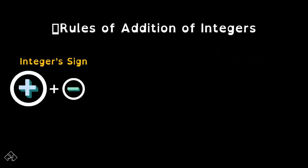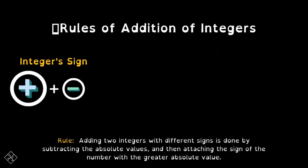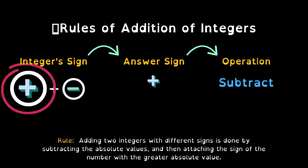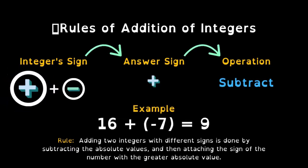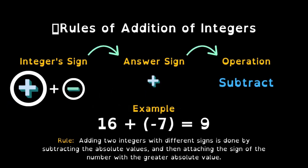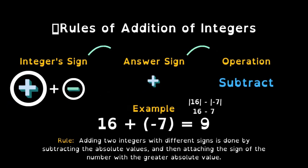Third case: integer sign of positive plus negative. Adding two integers with different signs is done by subtracting the absolute values and then attaching the sign of the number with a greater absolute value. Dito, ang greater absolute value natin is positive, so ang answer sign natin is positive and ang operation is subtraction. For example, 16 plus negative 7: 16 is the greater number, so 16 minus 7 equals 9, and the answer sign is positive.